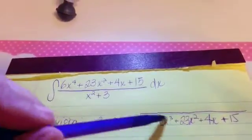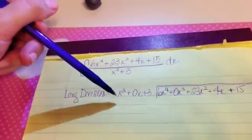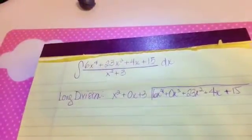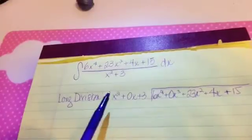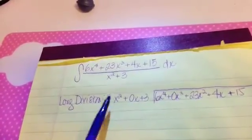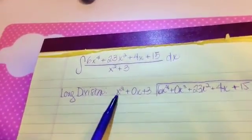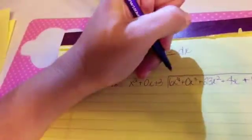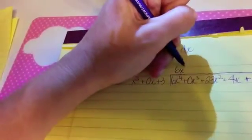In the numerator I was missing x to the third power, I went ahead and put it in. So let's go and divide. x squared divides into 6x to the fourth by how much? The answer to that is the same as asking what would you multiply x squared by to make it 6x to the fourth, and the answer would be 6x squared.